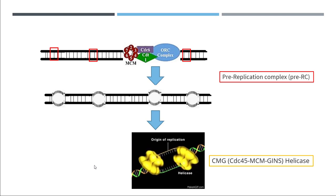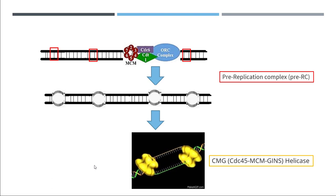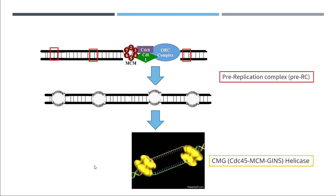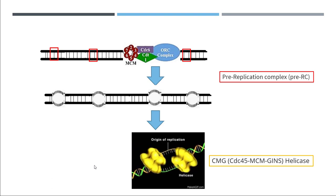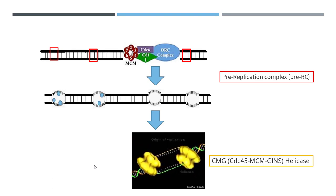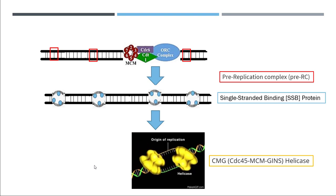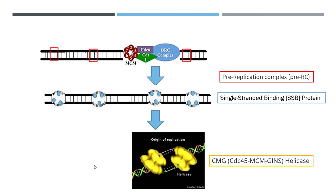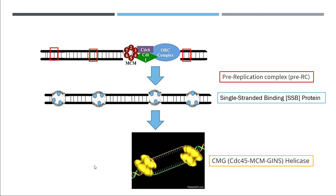Now the DNA is open, and these single-stranded DNA segments are very likely to undergo degradation because they are exposed — nucleases can attack them. They can also coil back again. To keep them open, we need proteins to maintain this structure. We have tiny proteins called single-stranded binding proteins attached to these structures. When these proteins are attached, the DNA single strands do not undergo degradation.